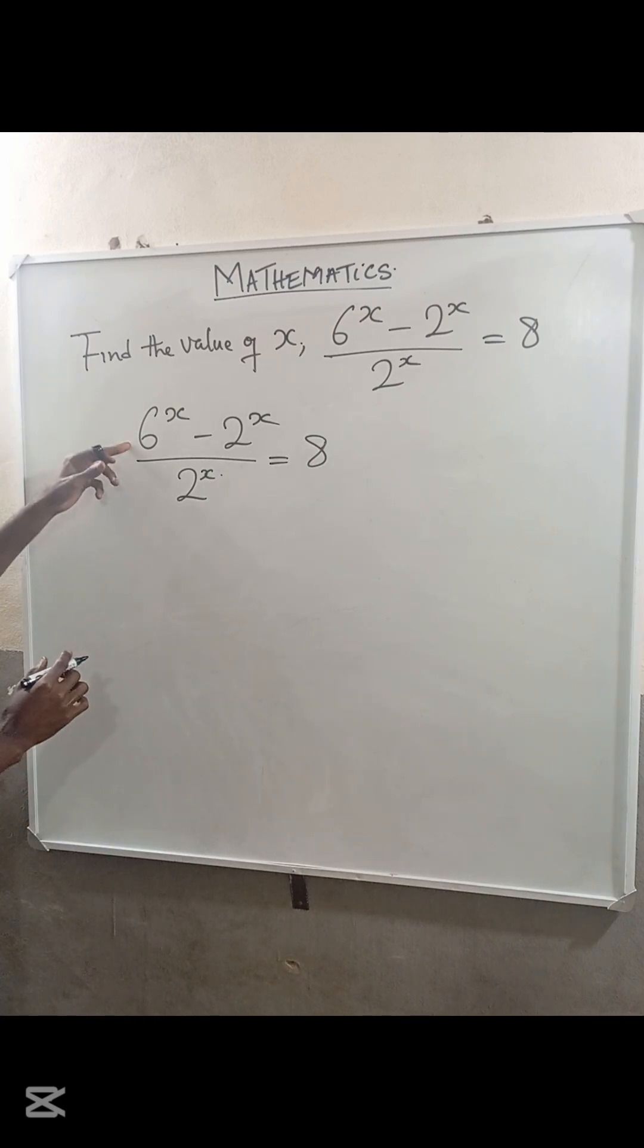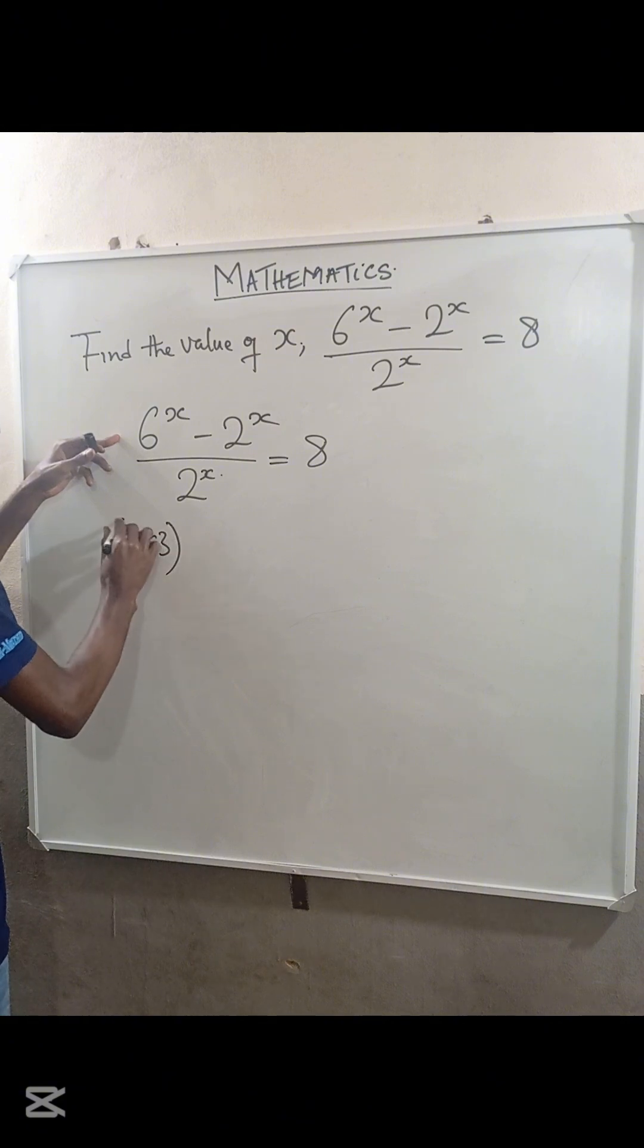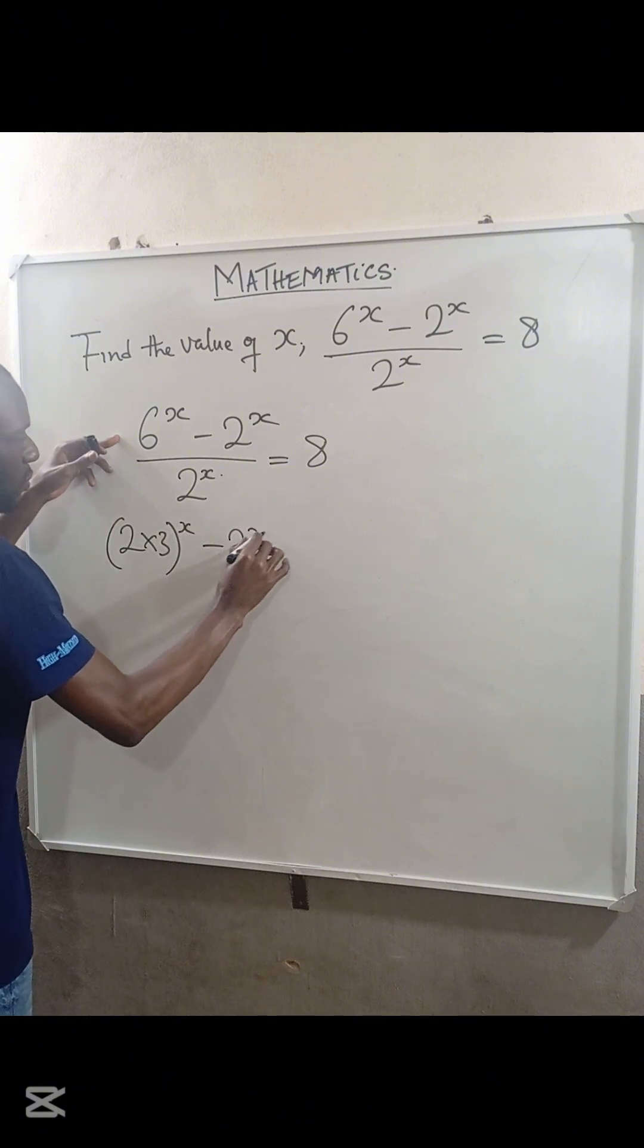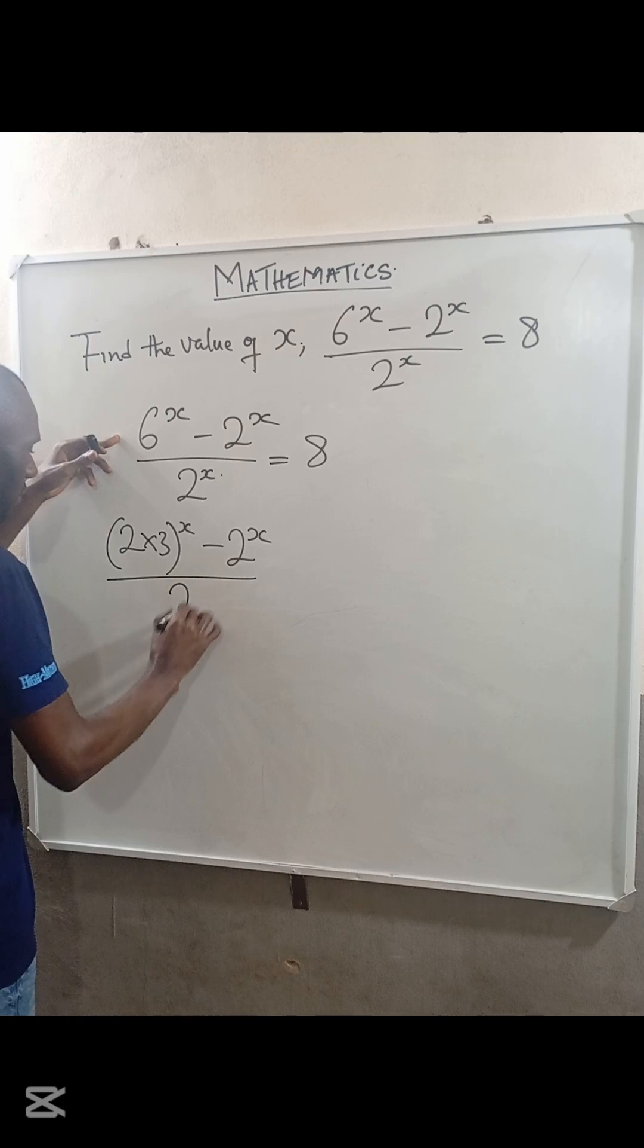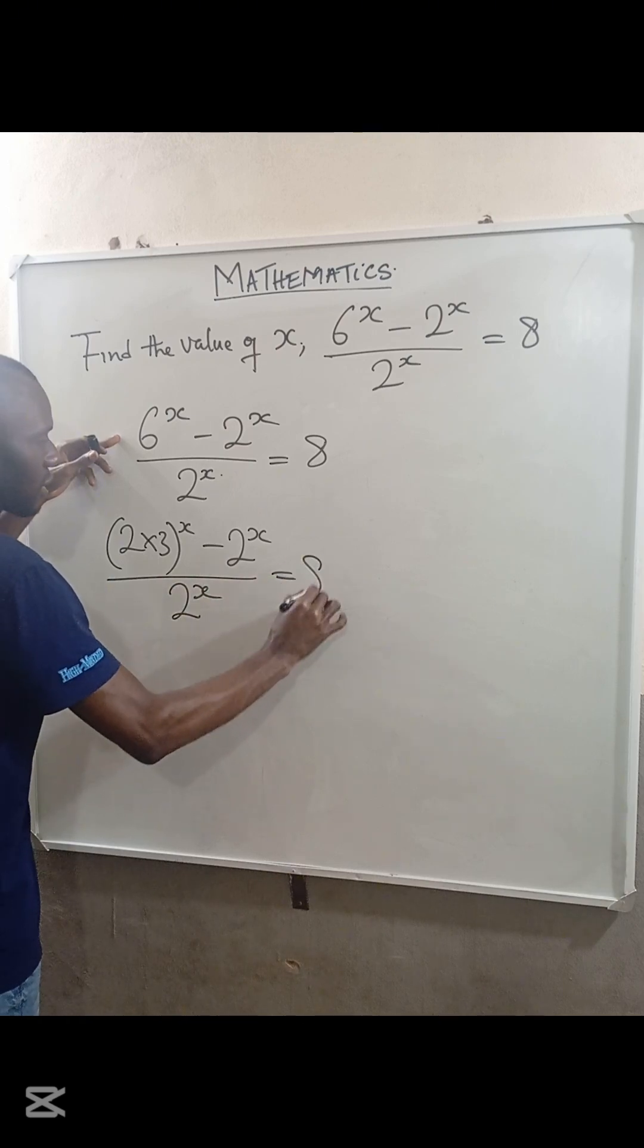Now, 6 can be expressed as 2 times 3, so the equation becomes (2×3)^x - 2^x / 2^x = 8.